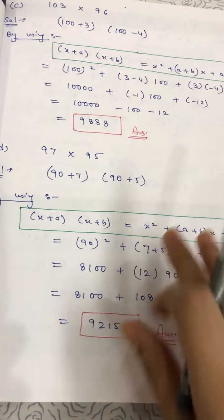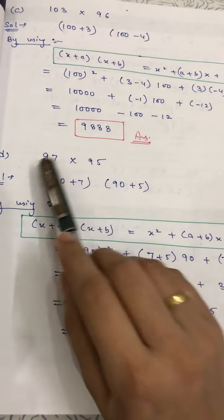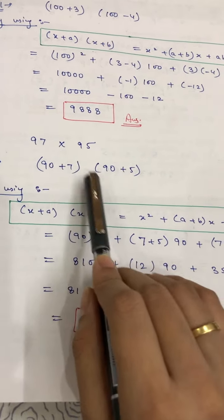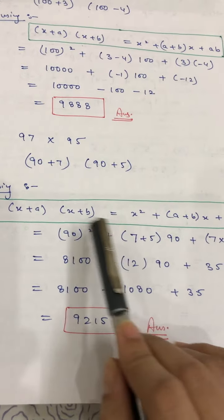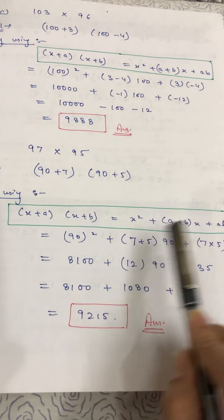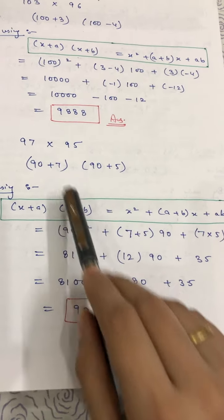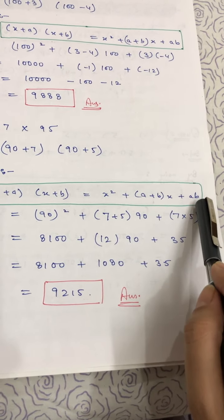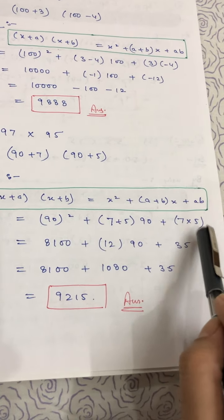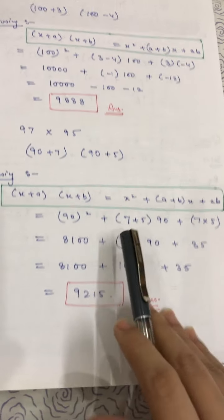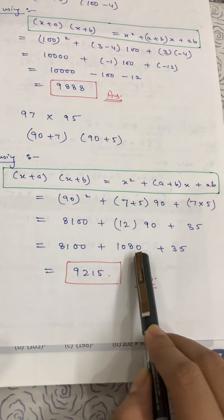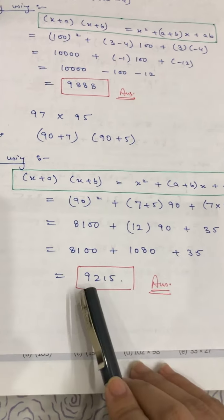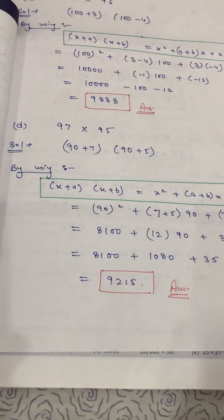For part d: 97×95. Write as 90+7 and 90+5. Apply the identity with x = 90, a = 7, b = 5: 90² + (7+5)×90 + (7×5) = 8100 + 1080 + 35 = 9215. That is the answer for part d.